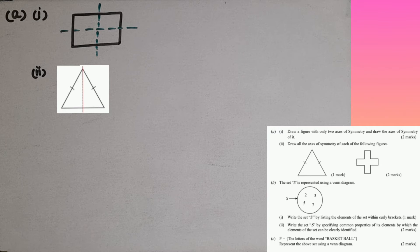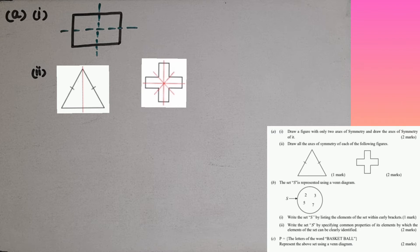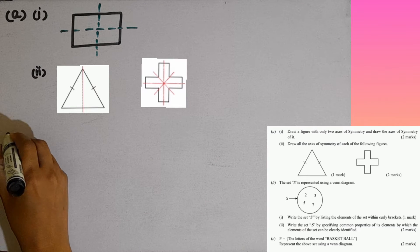In the second figure it is a cross like in the square. In this also we can take four axes of symmetry. I have drawn it like this. Then B part.